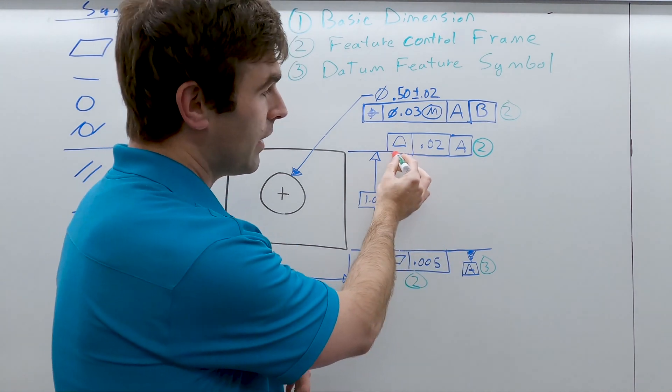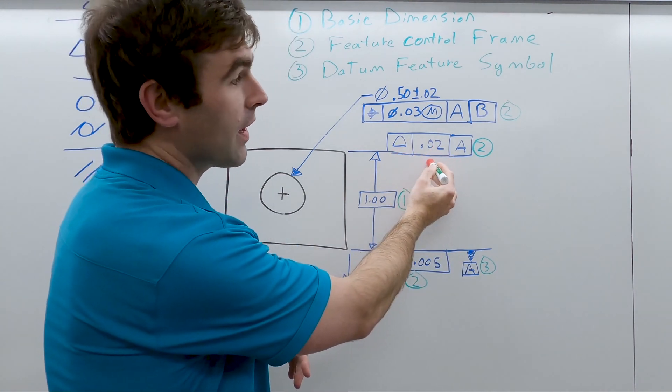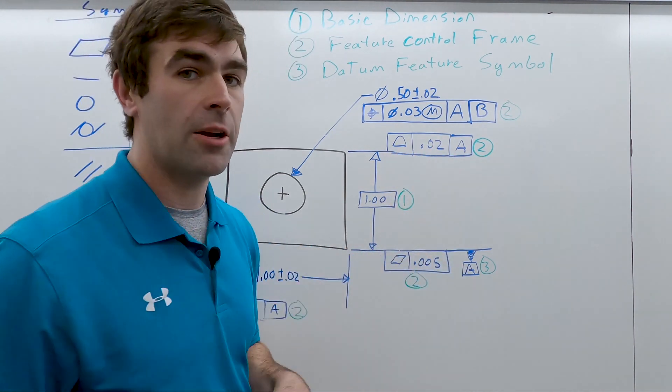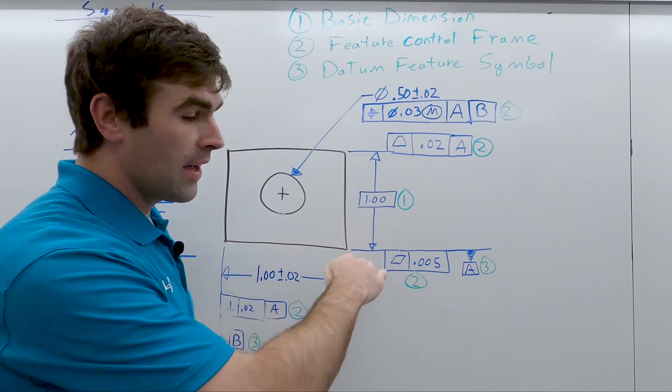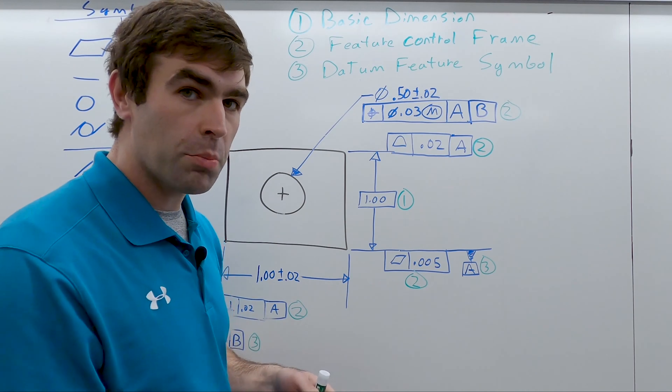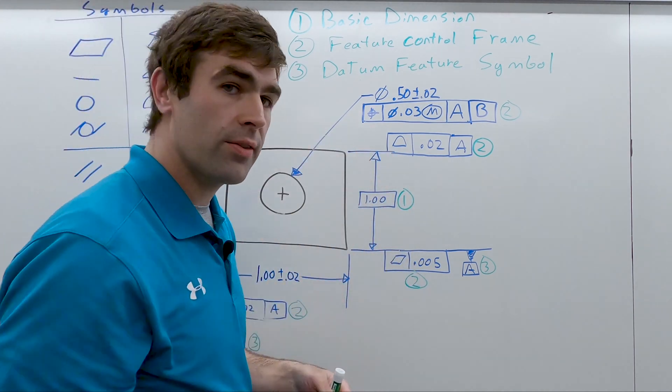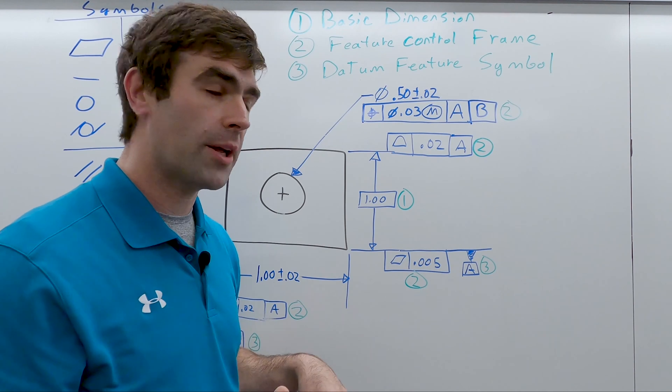So this is a profile with a tolerance of 20 thousandths to datum A. When we inspect this part, datum A has to be against something like a surface plate, and then we just measure how far the surface is away from it.